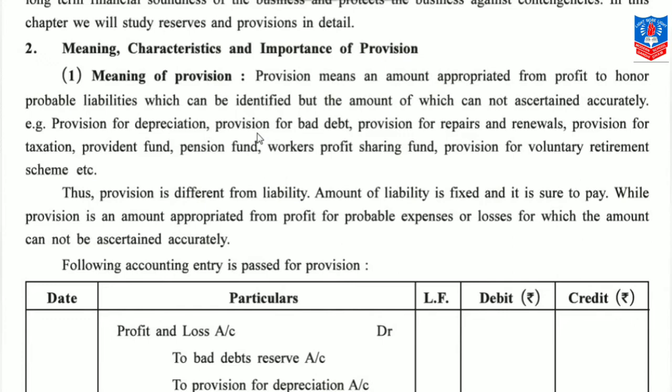Which liability it will be, we can determine and know — but how much amount will be needed cannot be decided precisely. Examples of provisions include: provision for depreciation, provision for bad debts, provision for repairs and renewals, provision for taxation, provident fund, pension fund, workers' profit sharing fund, provision for voluntary retirement scheme, etc. All these are examples of provision.